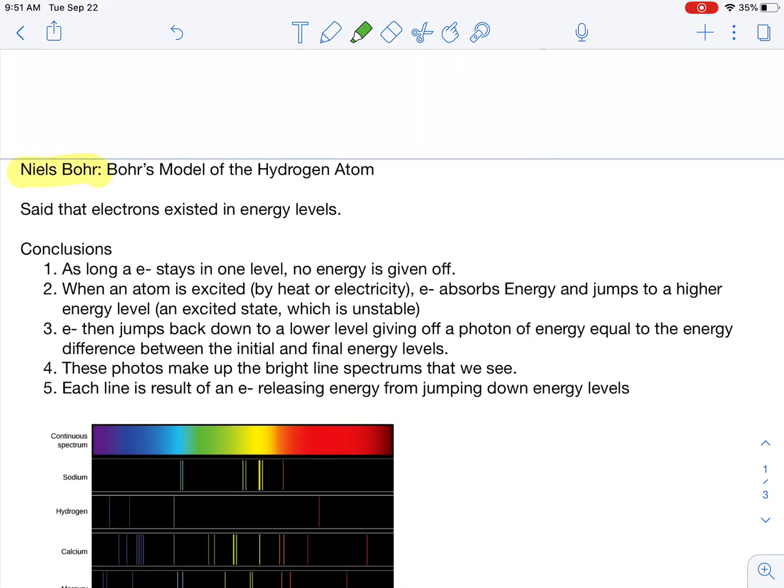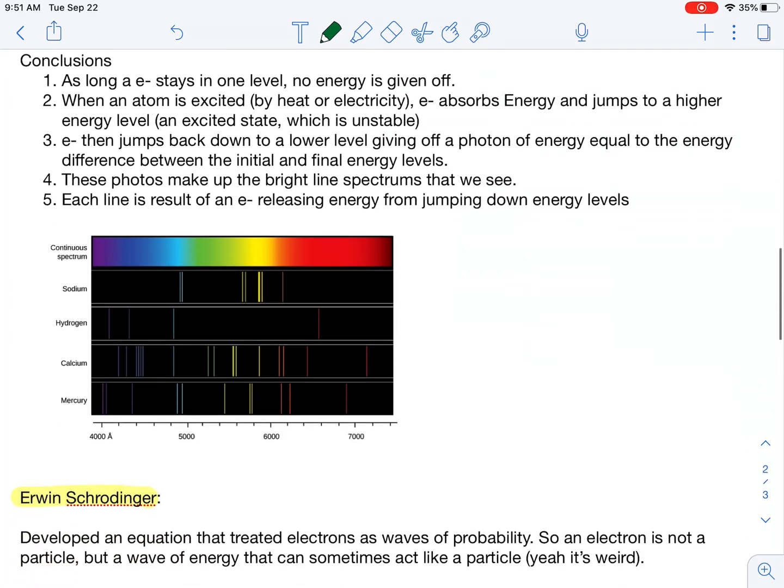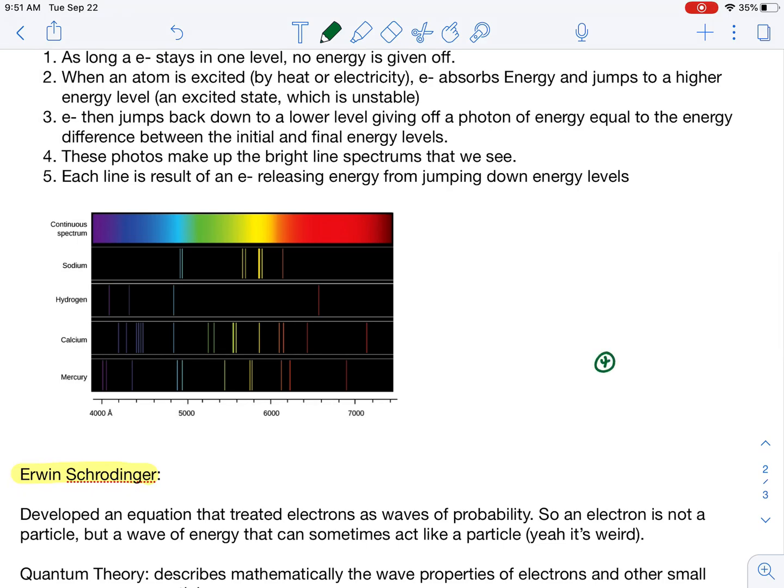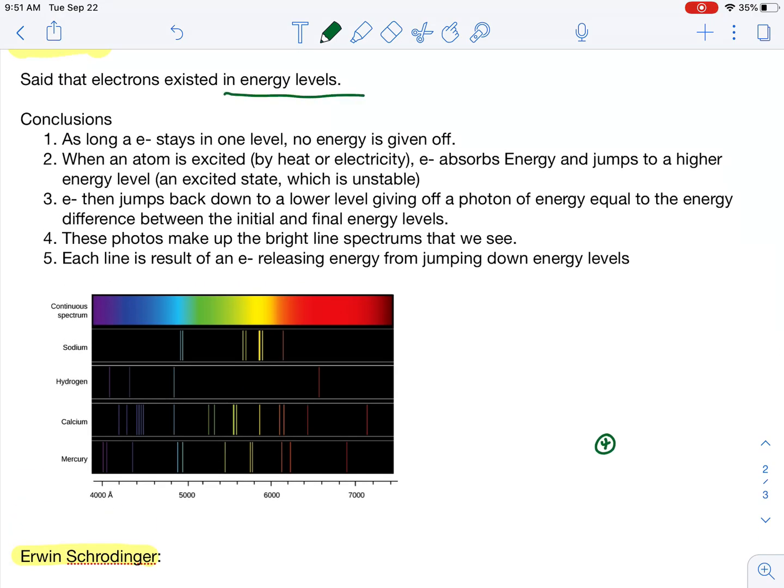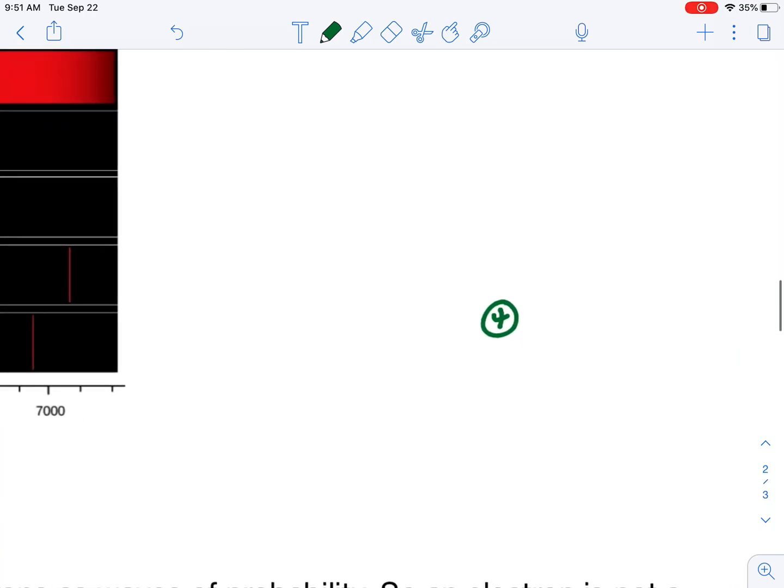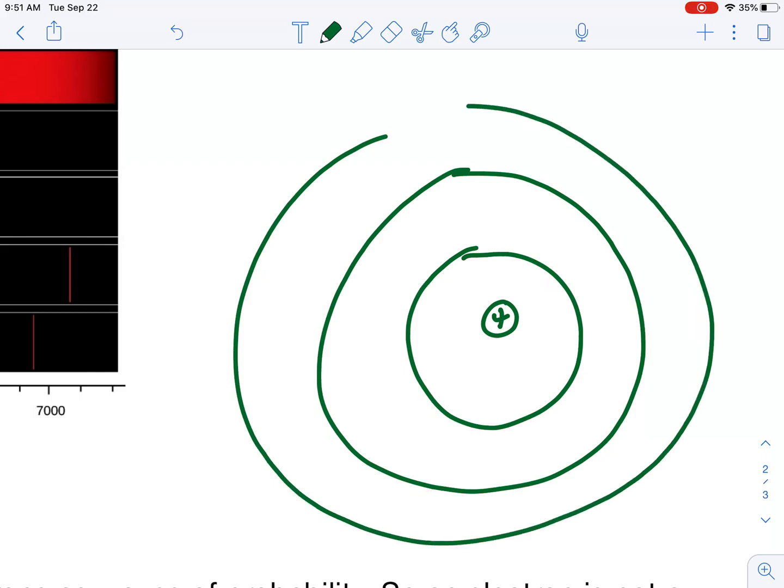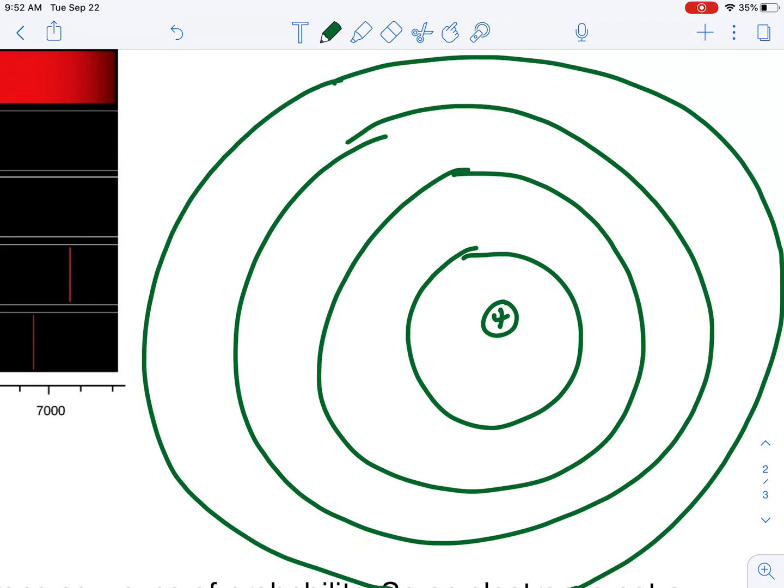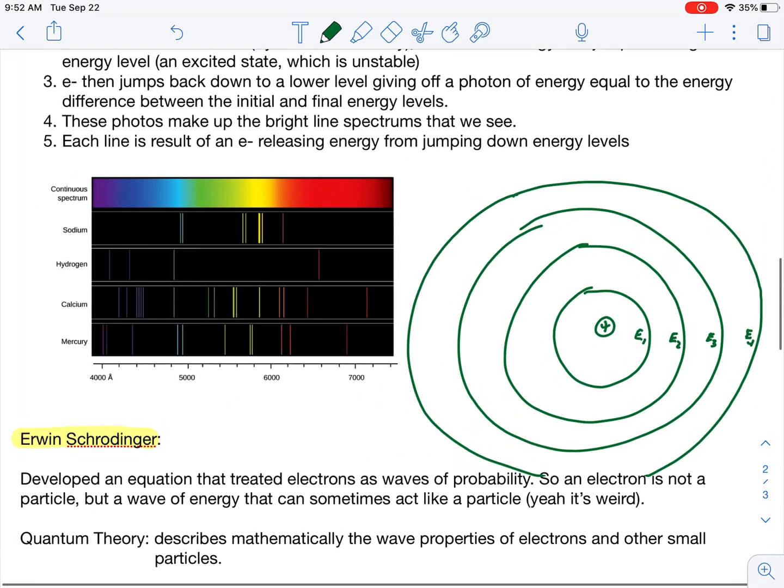All right. Our next scientist is Niels Bohr, Bohr's model of the hydrogen atom. I'll let you know what it looks like before I go through these conclusions. So Bohr agreed about the nucleus, the center of the atom. And then he said that empty space is filled up with these energy levels. And the electrons can exist on those energy levels. So it kind of looks like a bullseye. So this is Bohr's model of the atom.